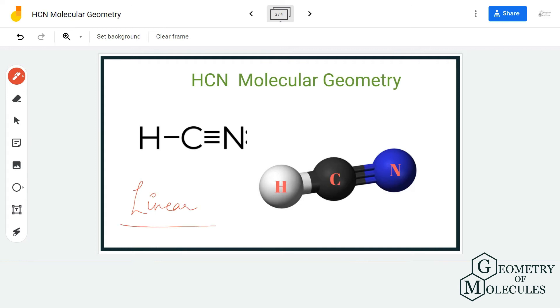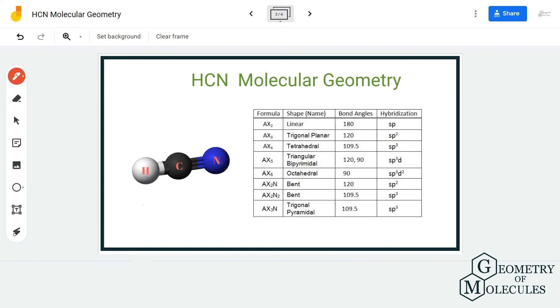To find out the AXN notation, you should know what it stands for. A stands for the central atom, X is the number of atoms forming bonds to the central atom, and N is the number of lone pairs on the central atom. Here we have carbon as the central atom, and hydrogen and nitrogen are forming bonds with it, so we have two atoms. There are no lone pairs of electrons on the central atom.